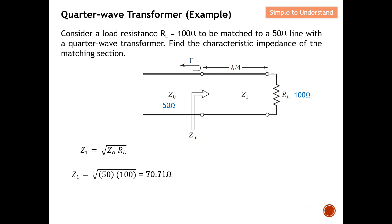For the design example: consider a load resistance R_L equal to 100 ohms that needs to be matched to 50 ohms using a quarter wave transformer. Find the characteristic impedance of the matching section. Using the formula with Z_0 equals 50 and R_L equals 100, we calculate Z1 equals the square root of 50 times 100, which gives Z1 equals 70.71 ohms. The length of the transmission line must be lambda over four.